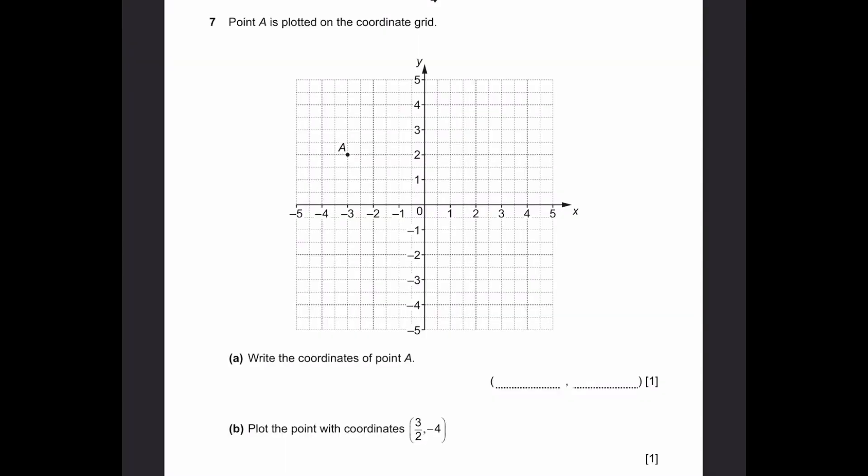Question 7. Point A is plotted on the coordinate grid. Write the coordinate of point A. We can see that the x value is minus 3 and the y value is 2, so it's just minus 3, 2. Part B, plot the point with coordinates 3 by 2, minus 4. So 3 by 2 is 1 and a half, which means this is exactly in the middle of 1 and 2 on the x-axis. So it has 1.5, 3 by 2, it's on this line. And minus 4 is the y coordinate, so it's on this line as well. So the point is on x equals 1.5 and y equals minus 4, it is over there. That's our answer.